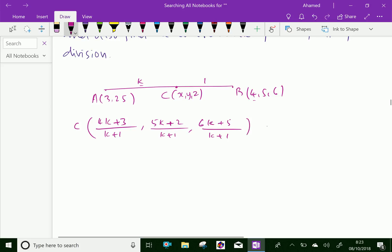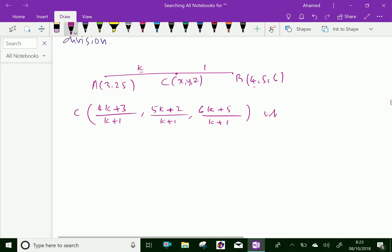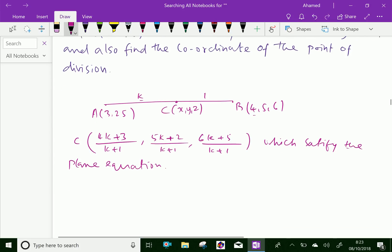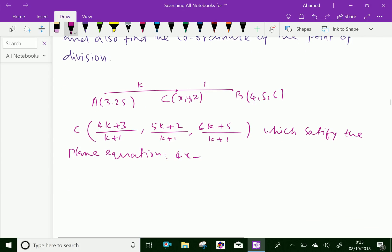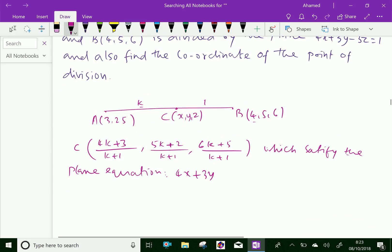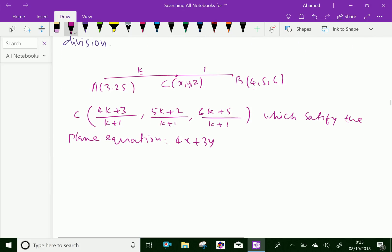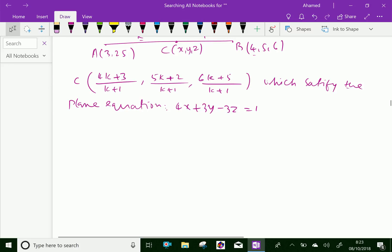These are the points C in terms of k which satisfy the equation, which is to satisfy the plane equation given. The plane equation, that is 4x plus 3y minus 3z equal to 1. Let us substitute this point xyz here.